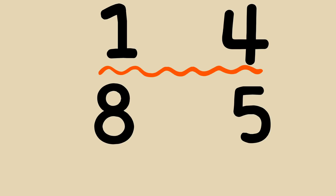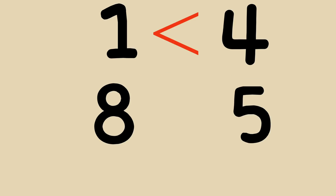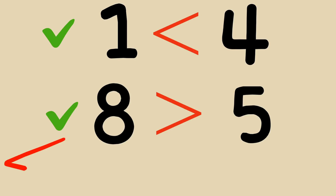Now I have some questions for you. Let's do them together. We have the numbers one and four — can you tell me which one is greater? Four is greater than one. Yes, that's correct! Now, what about the numbers five and eight? Eight is greater than five. Yes, that's correct! Good job, children. Here's a star for you.